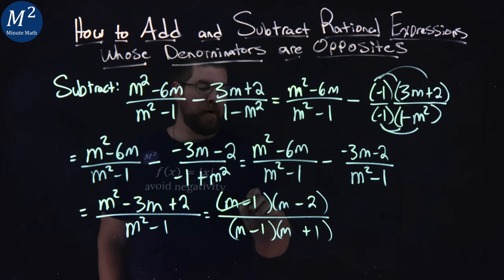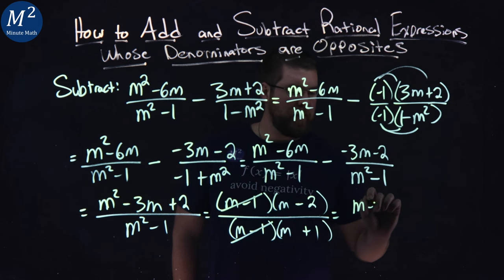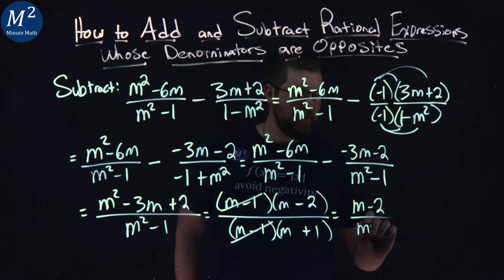Again, we notice m minus 1 is in the numerator and denominator. We can cancel that out. And we're left with m minus 2 over m plus 1.